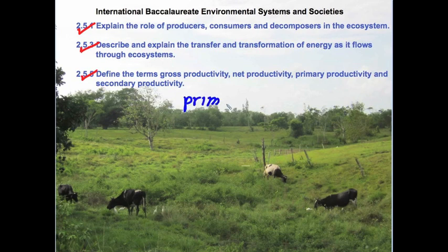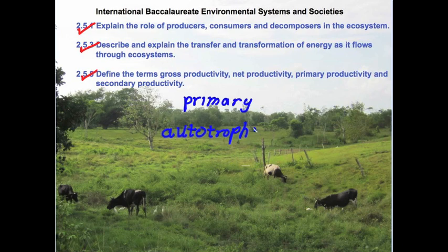Primary producers utilize sunlight, carbon dioxide and water from the soil to manufacture materials which sustain all life in the ecosystem. These primary producers are also referred to as autotrophs, which literally means self-feeders. Autotrophs are photosynthetic organisms and they are also referred to as primary producers.